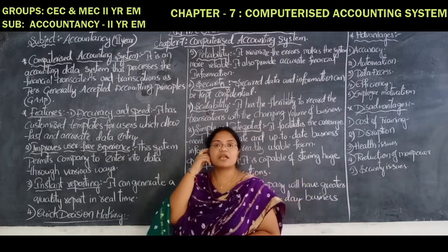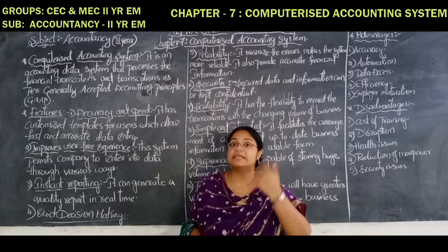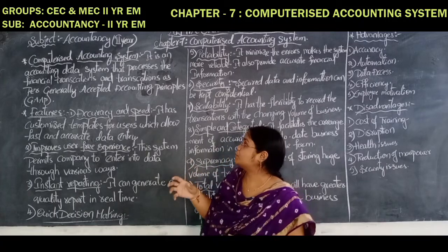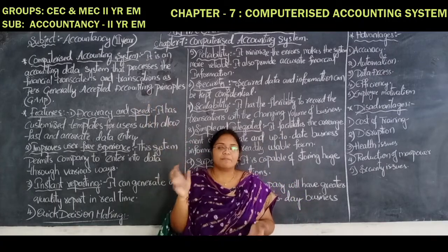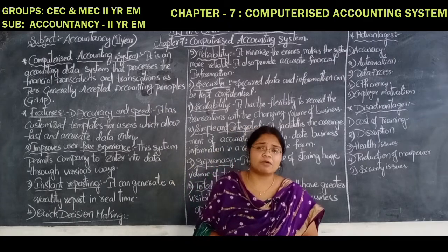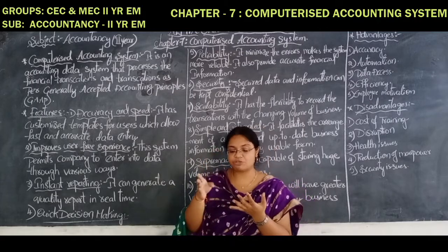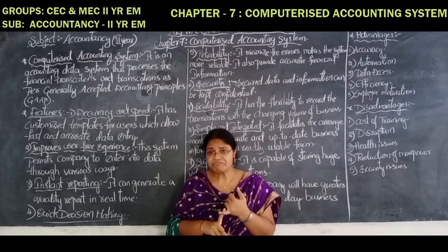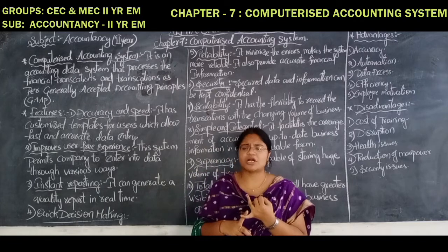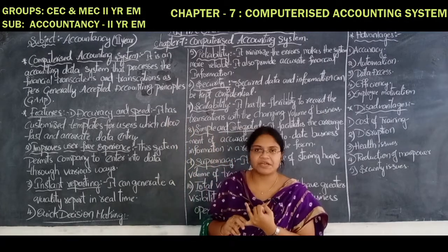GAAP indicates generally accepted accounting principles. This computerized accounting system helps to take decisions according to usage of the computer, and they have to follow the rules and regulations according to the generally accepted accounting principles. Generally accepted accounting principles are nothing but what you studied in your first year intermediate — that is accounting concepts and accounting conventions. Accounting concepts include business entity concept, cost concept, going concern concept, accounting period concept, matching concept, realization concept — all those concepts which you studied in your intermediate first year.